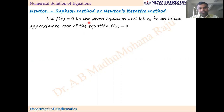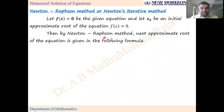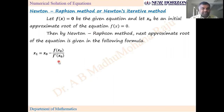Let f(x) = 0 be the given equation and let x₀ be an initial approximate root of the equation f(x) = 0. Then by Newton-Raphson method, the next approximate root of the equation is given by the formula: x₁ = x₀ - f(x₀) / f'(x₀), x₂ = x₁ - f(x₁) / f'(x₁).